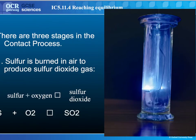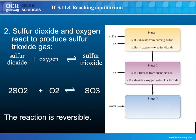There are three stages to the process, one of which is an equilibrium process. The first is sulfur reacting with oxygen to form sulfur dioxide — a forward reaction — and you can see sulfur burning with a distinctive blue flame. The second stage, the one we are most concerned with, is reversible: sulfur dioxide reacts with more oxygen to form sulfur trioxide — 2SO₂ + O₂ → 2SO₃.